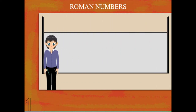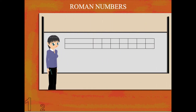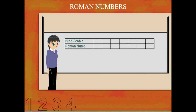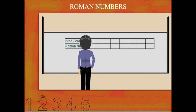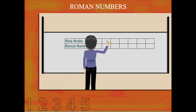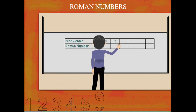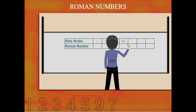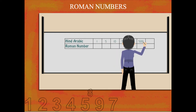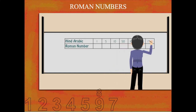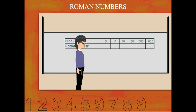Teacher Nancy makes a table to show Hindu-Arabic numbers and their Roman number counterparts. She writes 1, 5, 10, 50, 100, 500, and 1000.